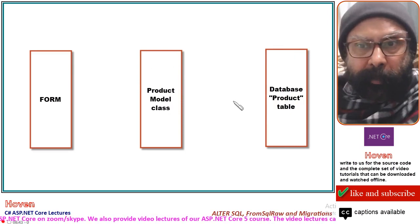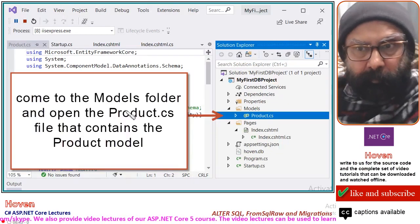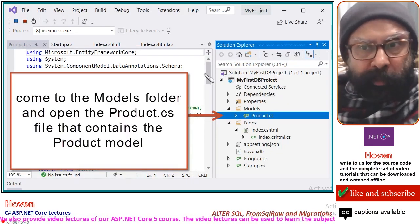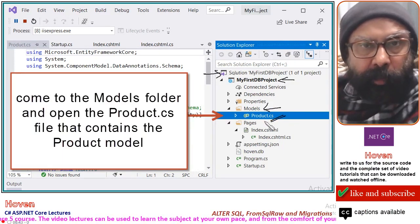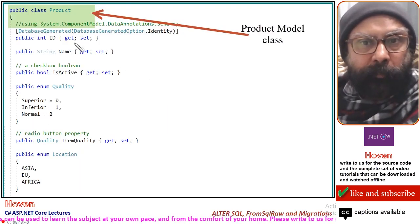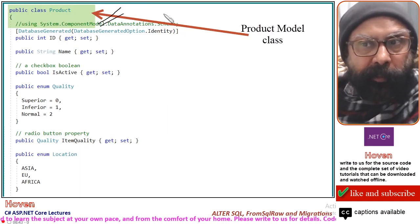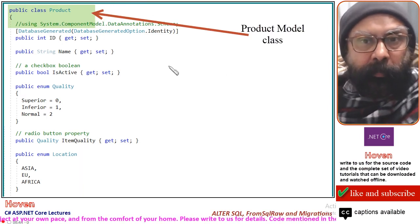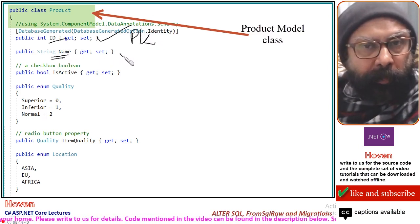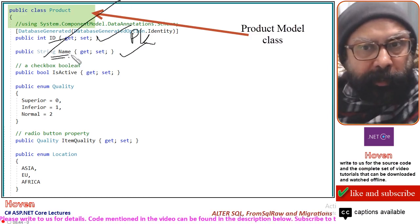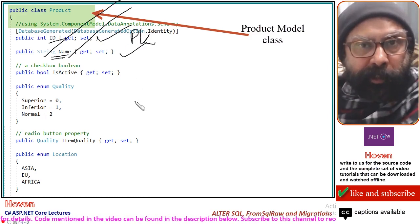Let us start by modifying the product model class. Come to the solution explorer, find the models folder, and open the file product.cs. This is the product model class. Inside this class we already have the int id primary key property and the string name property. Let us begin by adding the additional properties.